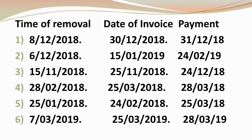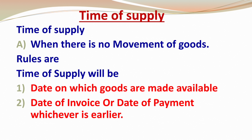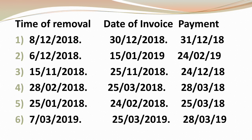For Case 1, the three dates given are: Time of Removal, Date of Invoice, and Date of Payment. In the first example, Date of Removal is 8th December 2018, Date of Invoice is 30th December 2018, and Date of Payment is 31st December 2018. Comparing these three, the earliest date is 8th December 2018, so that is the Time of Supply. In Case 2, dates are 6th December 2018, 15th January 2019, and 24th February 2019 — the earliest is 6th December 2018.